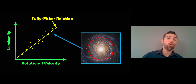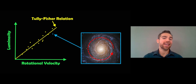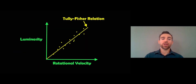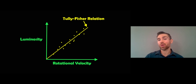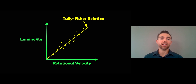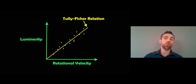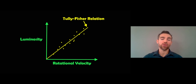You can basically measure one property and work out the other, and then you can measure the distance. Here you have the Tully-Fisher relation — that straight yellow line between the rotational velocity and the luminosity of a galaxy. It shows that if you have a more luminous or brighter galaxy, its rotational velocity is going to be greater as well. If you can measure one of those two, you can use this relation to get the other.